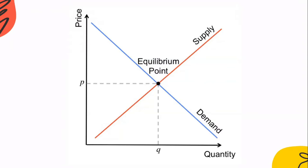Now, looking at a chart to explain this further: when demand increases, supply decreases, and vice versa. The most important concept here is the equilibrium point. In VSA, we take trades based on this equilibrium point. On a scale, demand starts at plus 50 and reduces — plus 40, plus 30, down to zero. Supply starts at minus 50 and also moves toward zero. When both reach zero, that is our equilibrium point.